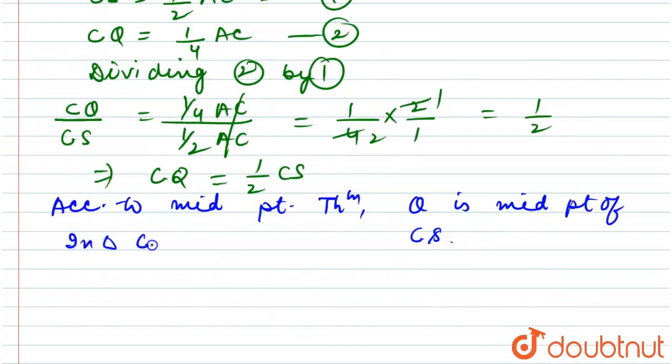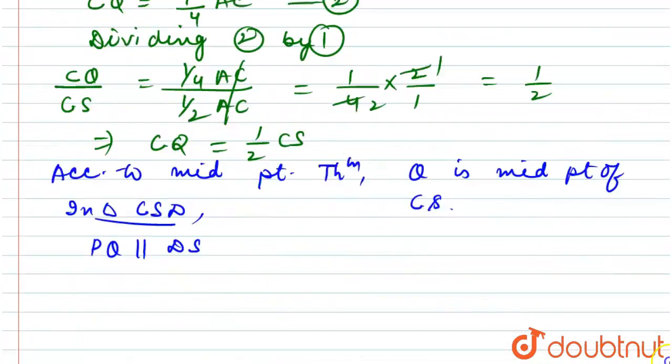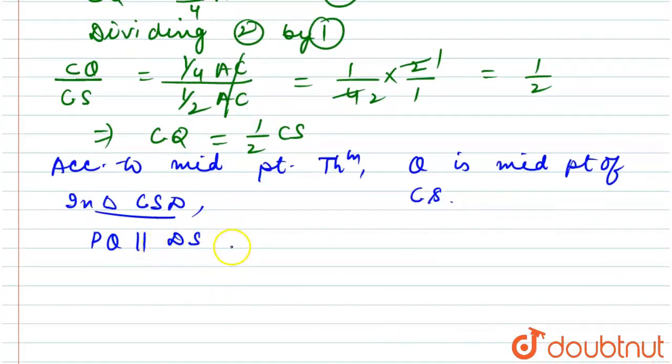Now in triangle CSD, PQ is parallel to DS. If PQ is parallel to DS, then we can say that QR is parallel to SP.